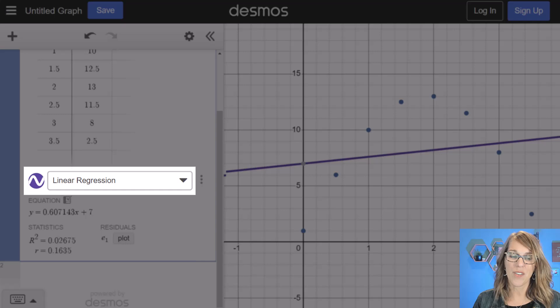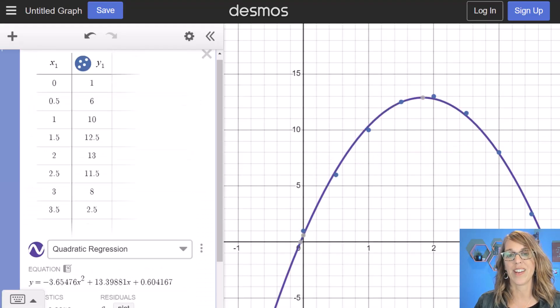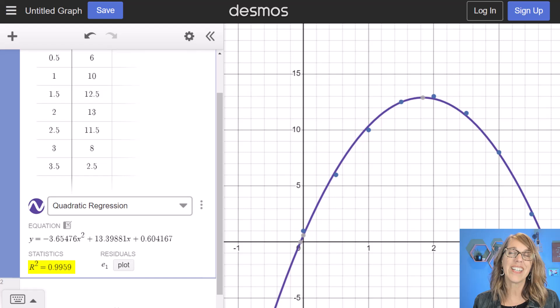So I'm going to click the down arrow for this drop down menu. And we're going to choose a quadratic regression. Now this one looks great. And as I look at that R squared value, it's 0.9959. The highest that could be is 1. So this is a really, really nice fit.